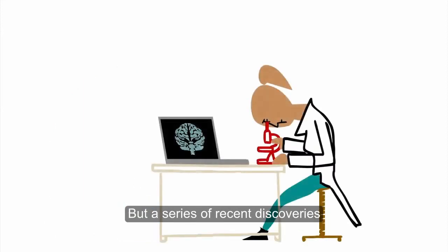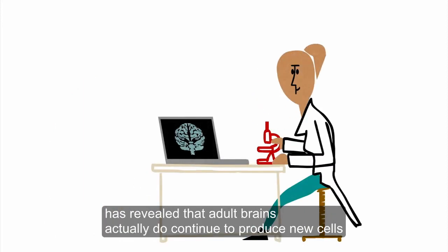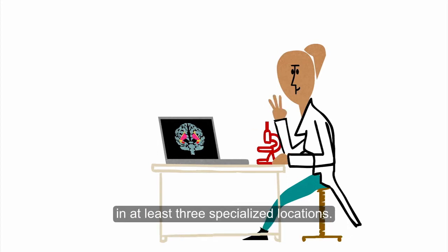But a series of recent discoveries has revealed that adult brains actually do continue to produce new cells in at least three specialized locations.